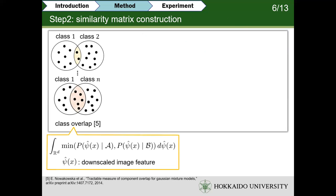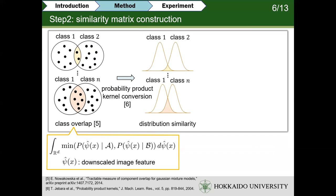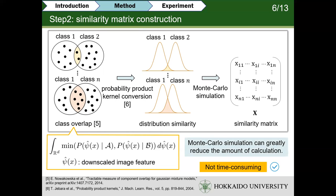Next is step 2. When we have the downscaled image features, we can define the class overlap with the distribution of image features that belong to different classes. For example, with the Gaussian mixture model theory, the overlap of classes A and B can be defined with the equation. Since it is prohibitively complicated to calculate the integral directly, we use the probability product kernel to transform it into a distribution similarity problem, and then use the Monte Carlo method to simulate this calculating process. Monte Carlo simulation can greatly reduce the amount of calculation.